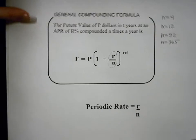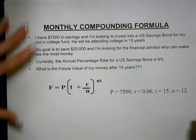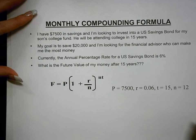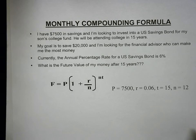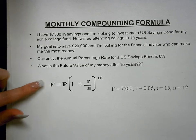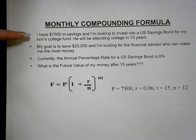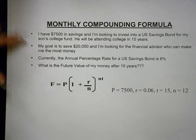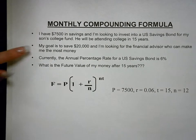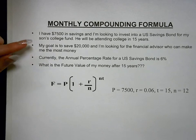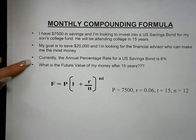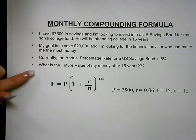Now we're going to look at our financial advisory problem, but now we're going to calculate the future value on the money using the monthly compounding formula. To recap: I have $7,500 in savings and I'm looking to invest in a U.S. savings bond for my son's college fund. He will be attending college in 15 years. My goal is to save $20,000. The annual percentage rate for a U.S. savings bond is 6%. What is the future value of my money after 15 years?